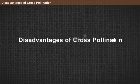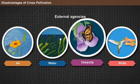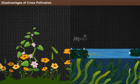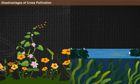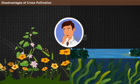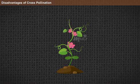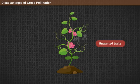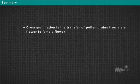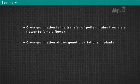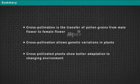Disadvantages of cross-pollination: reproduction is solely dependent on external agencies; there is more wastage of pollen grains compared to self-pollination; wasted pollen grains can cause allergies to humans; and there are possibilities of inducing unwanted traits in the progeny. In summary, cross-pollination is the transfer of pollen grains from the male flower to the female flower, allowing genetic variations and better environmental adaptation.